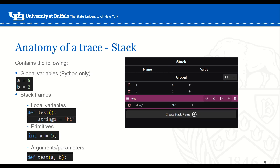The stack contains the following: global variables, which only exist if we're doing Python; and stack frames, which contain things like local variables, primitives, and arguments. You can see on the right I have a screenshot of what the stack would look like for some example code. You can see the global variables — a is 5 and b is 2 — listed under the global section.